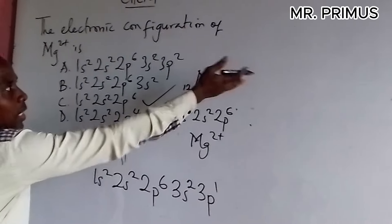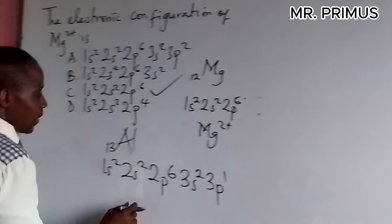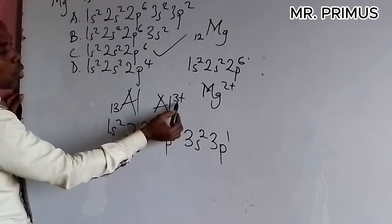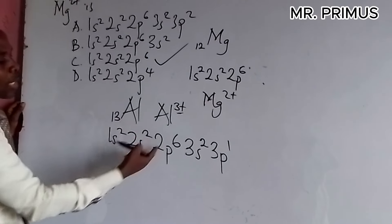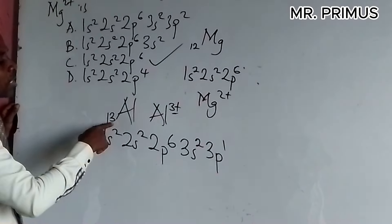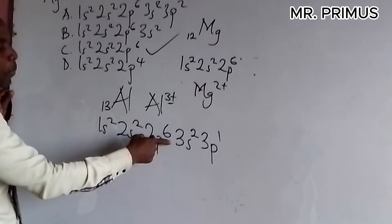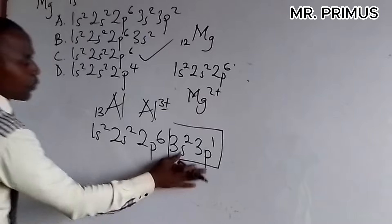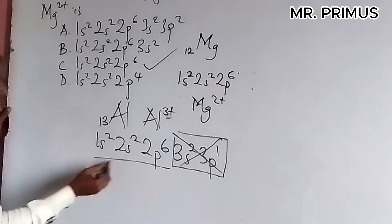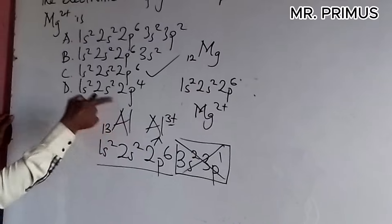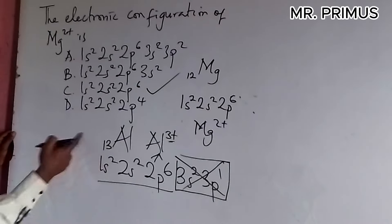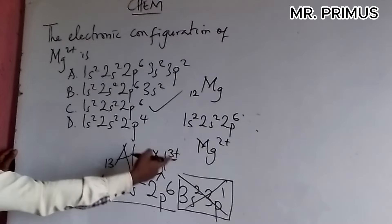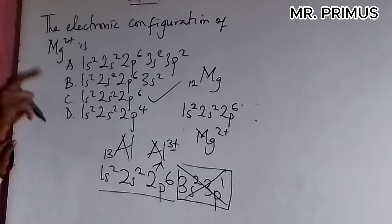When it forms aluminum ion, it means it will lose three electrons here because we are in electronic configuration. If it loses three electrons, 2 plus 2 is 4, 4 plus 6 is 10. Therefore these ones are off. So if we remove them, if we remove them, this will be the configuration of aluminum ion. That is how to do this. So anyone you are given, please be very careful. Check the charge that is there. So let's look at the third question for today.